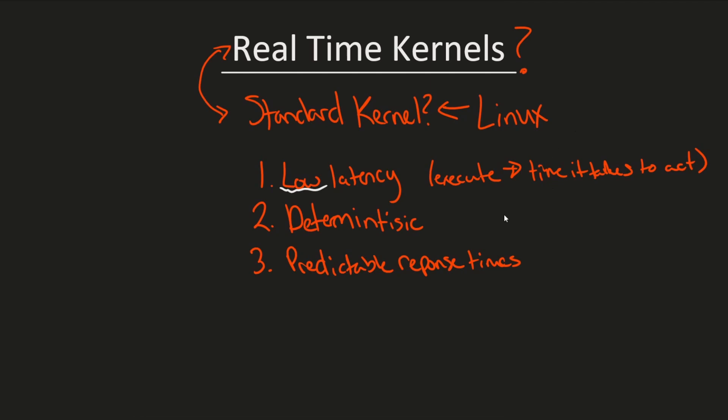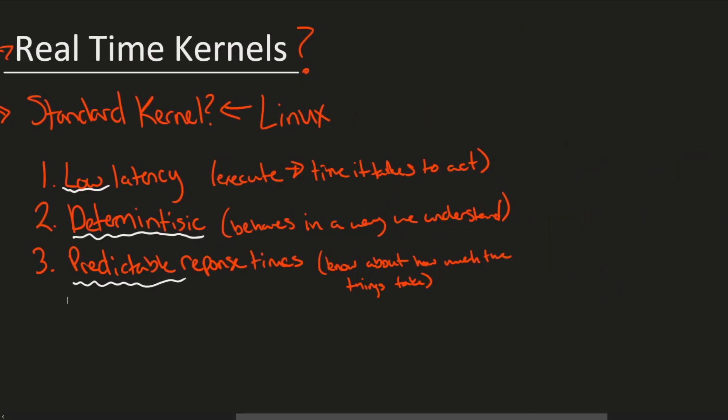Continuing on, deterministic means that it behaves in a way that we understand, whereas modern operating systems and the layers and layers of complexity make things very undeterministic. Finally, predictable response times meaning we know about how much time things take because we do have a deterministic system. So again, important that it's predictable and we'll discuss even more why here in a moment. Let's slide things over and talk about this some more.